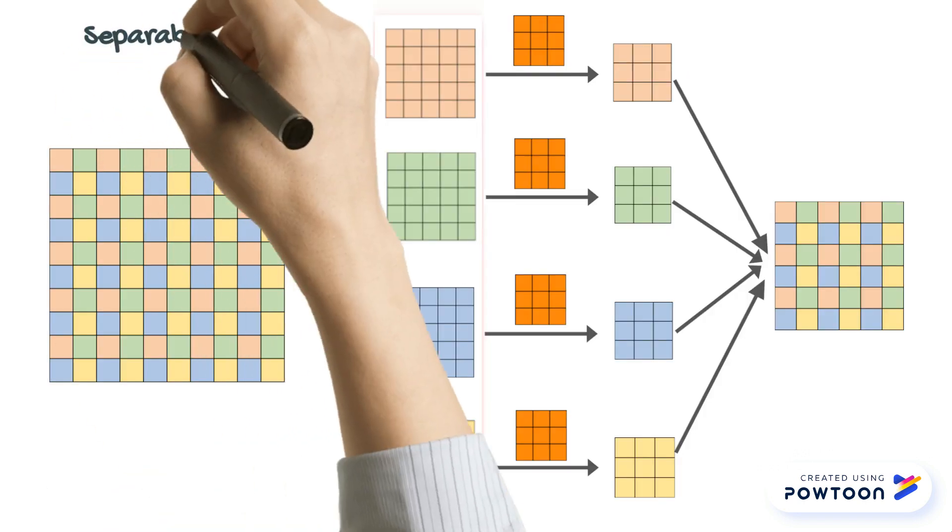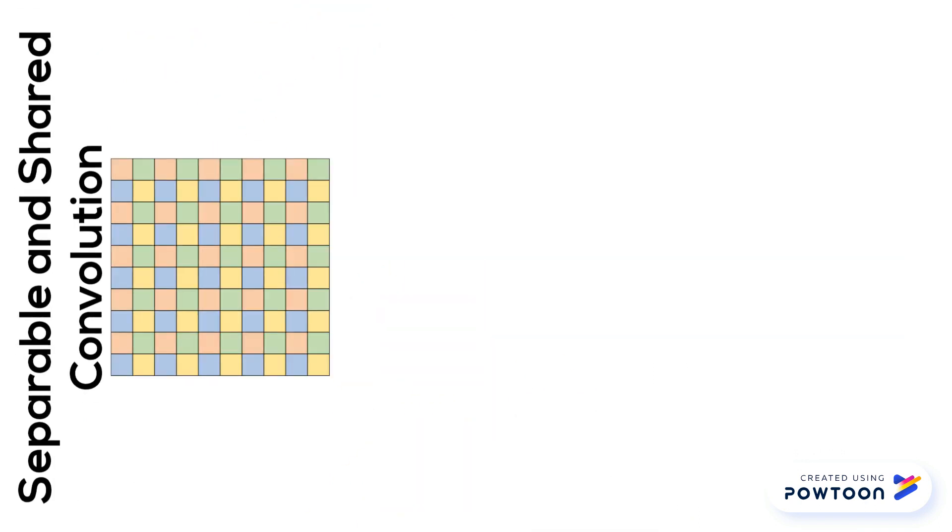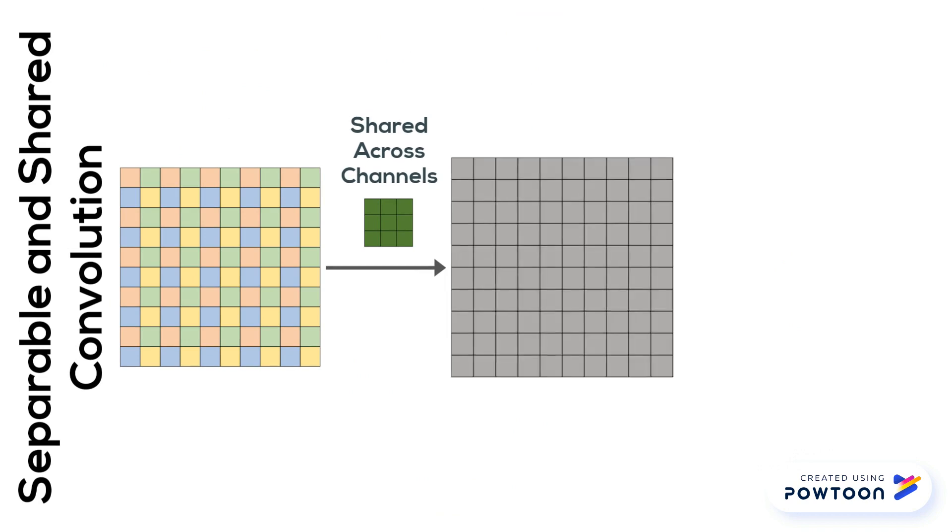Our second solution uses a separable and shared convolution. Unlike regular convolution, we use shared weights across all channels.